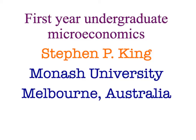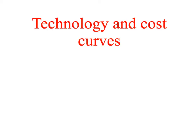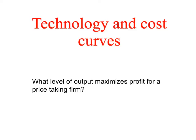Welcome back to First Year Undergraduate Microeconomics. Today we're continuing on with our discussion of cost curves, but now we're going to bring it all together with our profit maximisation. We're going to ask what is the level of output that maximises profit for a price-taking firm, and we're going to show how to find it.